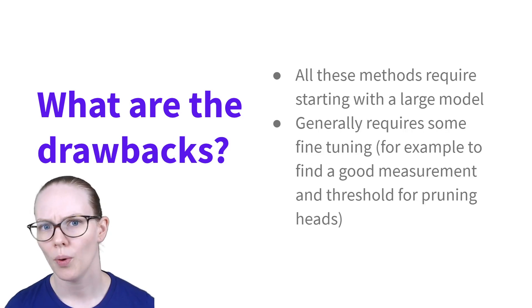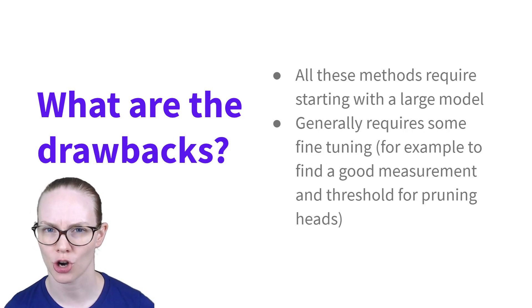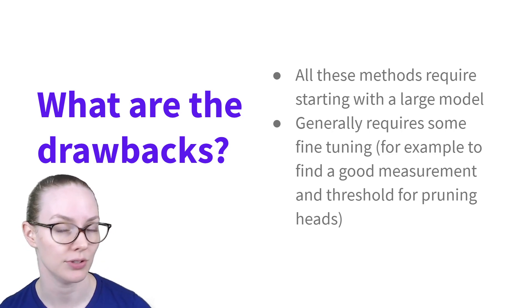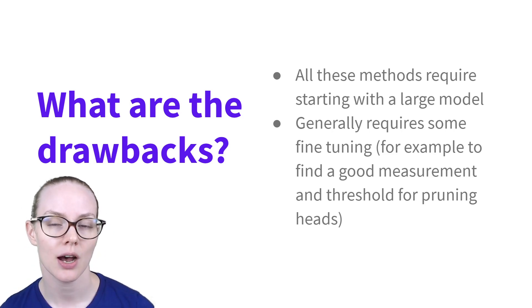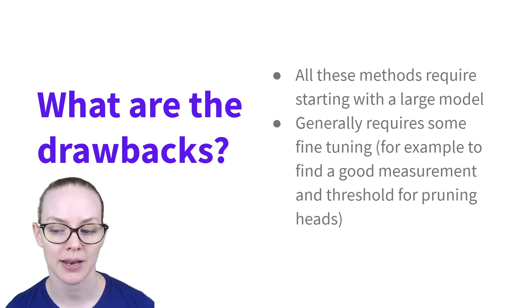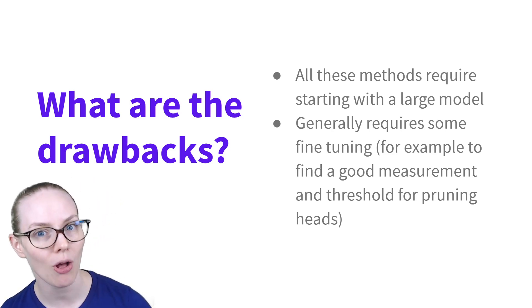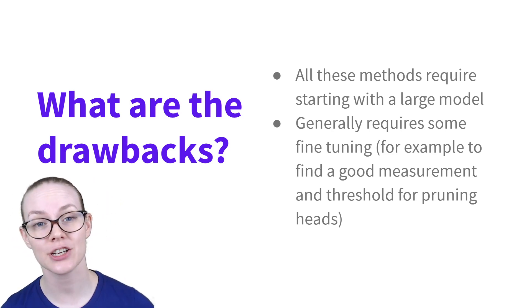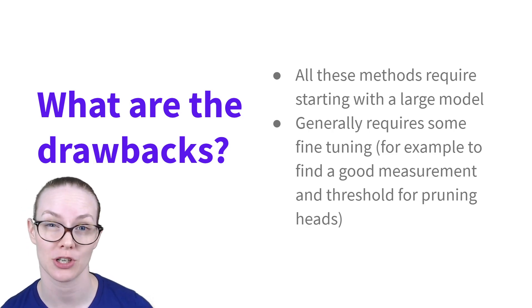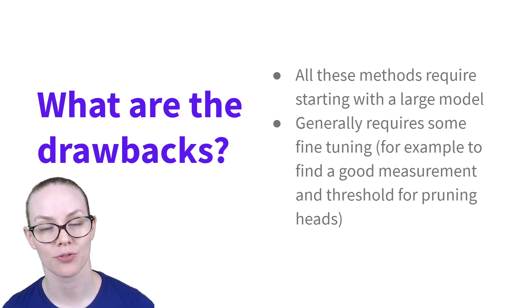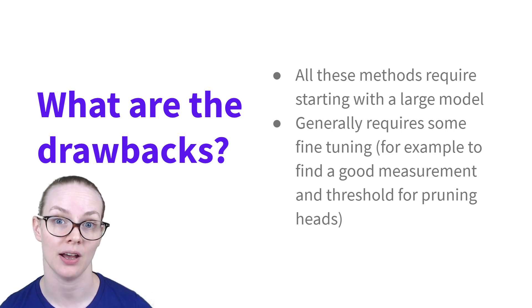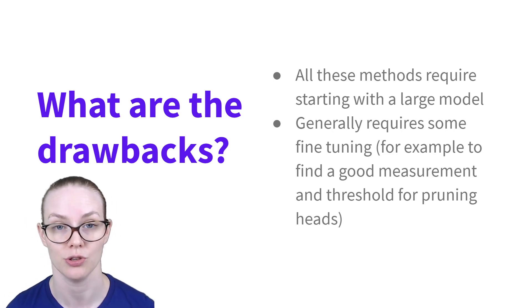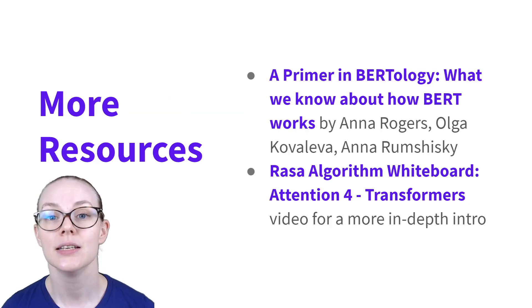What are the drawbacks? One big one is that these methods all require starting with a large model that you then reduce using the techniques mentioned. So far we haven't been able to train a small model that has the same sort of state-of-the-art results. In addition, most of these methods require some specialized skills — for example, for pruning, figuring out a good method of detecting importance and a good threshold to decide which heads to keep.